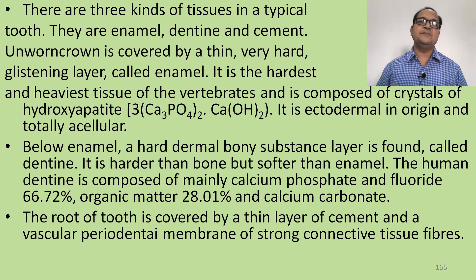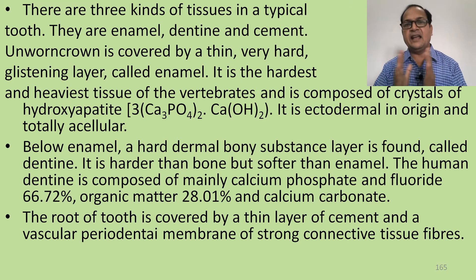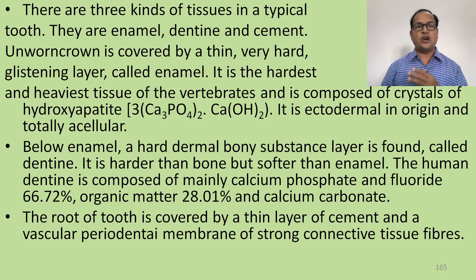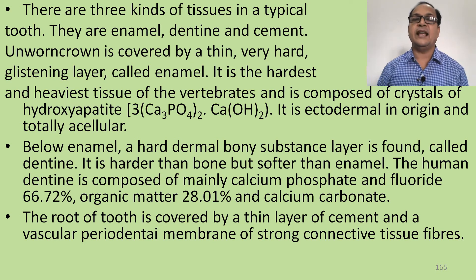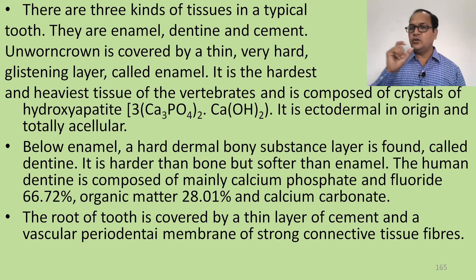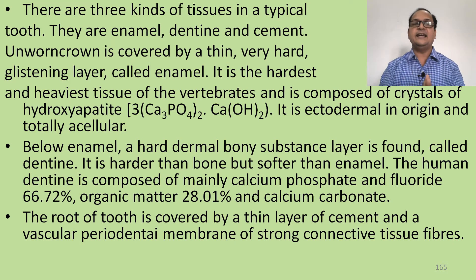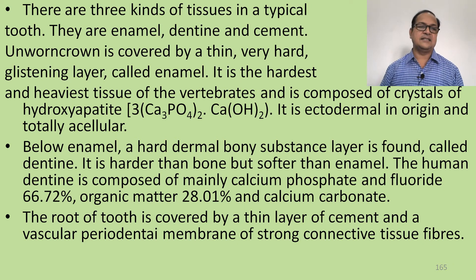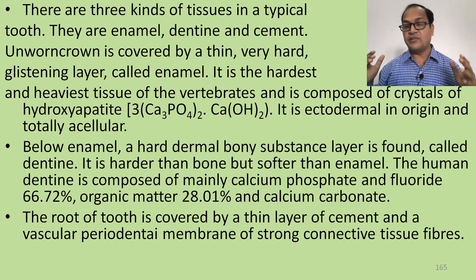There are three kinds of tissues in a typical tooth: enamel, dentine, and cement. The unworn crown is covered by a thin, very hard, glistening layer called enamel — the hardest and heaviest tissue of the vertebrate body, composed of crystals of hydroxyapatite, ectodermal in origin, and totally acellular. Below the enamel is a hard dermal bony layer called dentine, harder than bone but softer than enamel, composed mainly of calcium phosphate, fluoride, organic matter, and calcium carbonate. The root is covered by a thin layer of cement and a vascular periodontal membrane of strong connective tissue fibers.